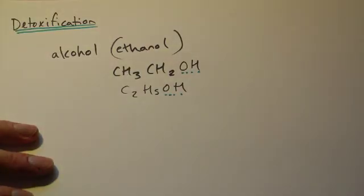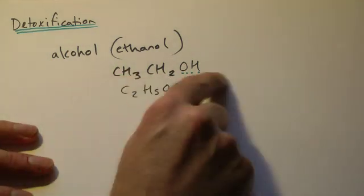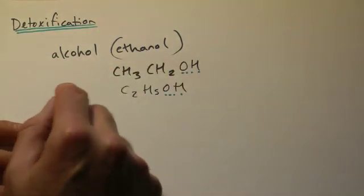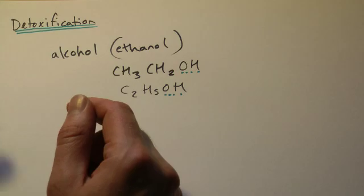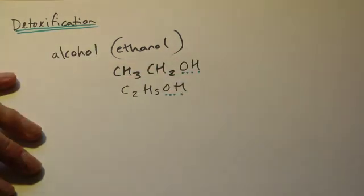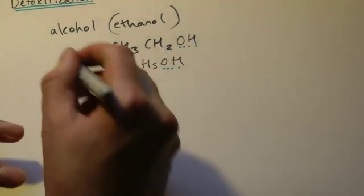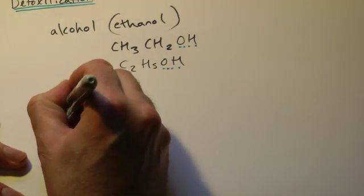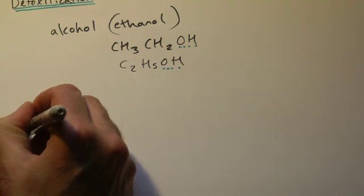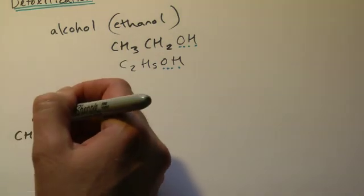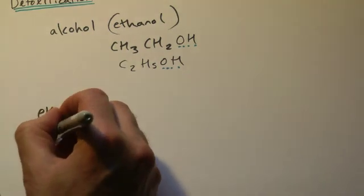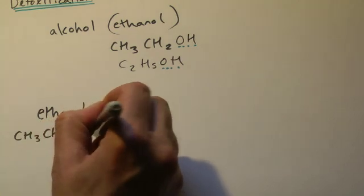So we've got two things going on really here, that we need to get rid of the toxic effects of the alcohol drug. But we don't want to simply break the whole thing down and lose it because potentially we've got quite a lot of energy locked up in here. So if we start off with ethanol, I'll put these chemicals in here as we go, so CH3, CH2, OH.